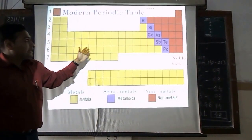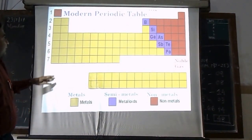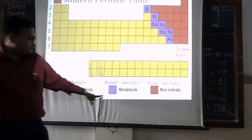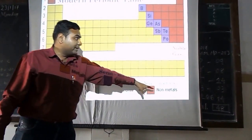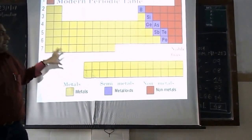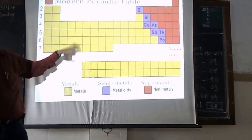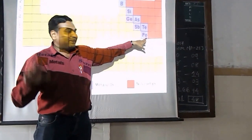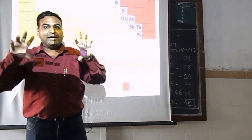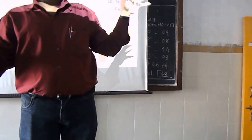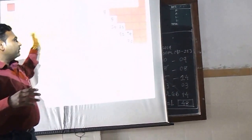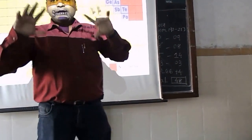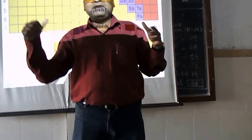Now let's look at the modern periodic table. In the modern periodic table I have shown three different colors: yellow for metals, another color for metalloids, and red for non-metals. You can see that the maximum number of blocks are yellow, meaning most elements are metals. Only a small number of elements are semi-metals or metalloids, and there are very limited non-metals. The maximum number of elements are metals. We have seen the different properties of elements through their electronic configuration.